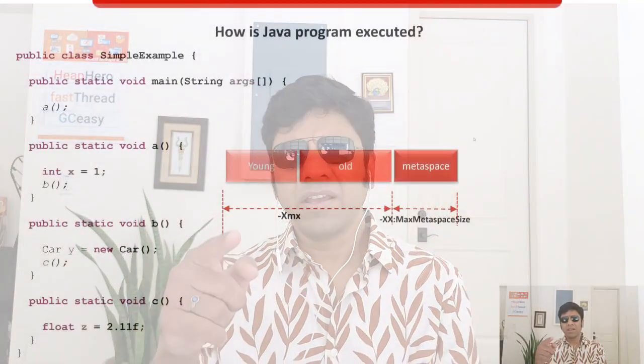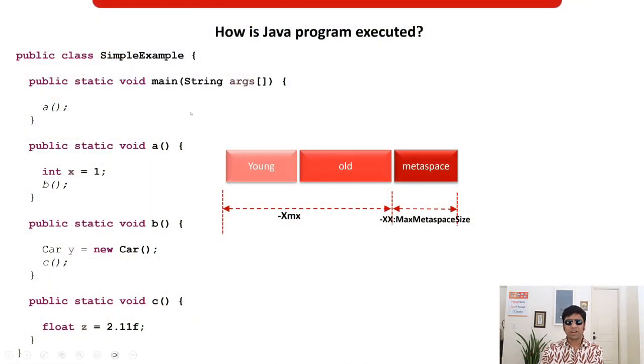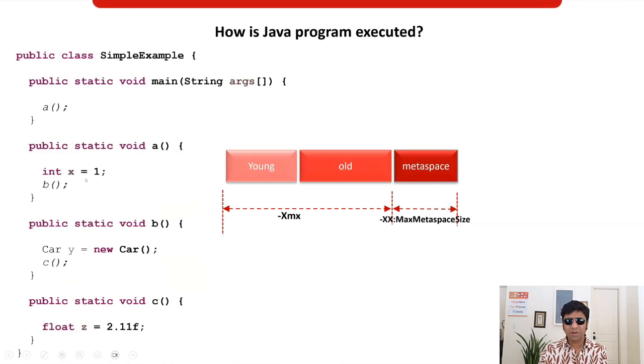Now, equipped with this knowledge, let's look at what triggers the stack overflow error. For our discussion I have a hypothetical program. Let's execute this program — it will make it very clear how the stack overflow error happens. This is a simple example: it has a main method, which is the entry point to any Java application.